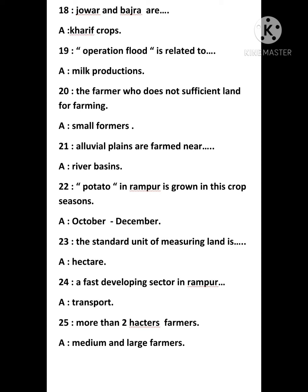Twenty-first question: alluvial plains are formed near — answer is river basins. Twenty-second question: potato in Rampur is grown in this crop season — answer is October to December.